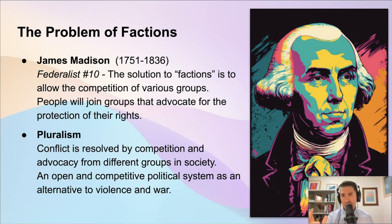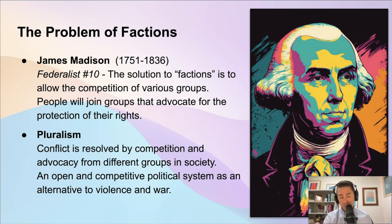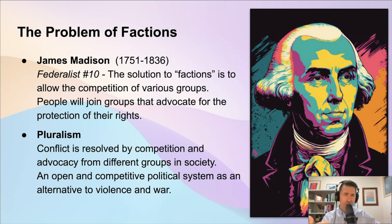Federalist No. 10 is one of James Madison's most famous essays. In it, he's talking about the problem of factions — groups that arise. In a democracy, you could have a small group or maybe even a very large group rise up and cause a lot of problems. A group might rise up and want to take everybody's rights away, or maybe strip an unpopular minority group of their rights.